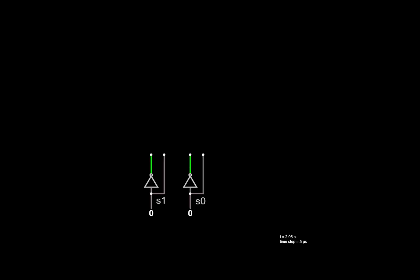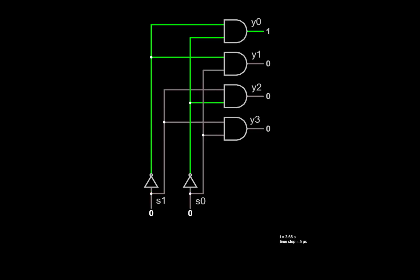To build a decoder, we start with signals for each of the inputs for the select lines and add inverters so we can get the values of their complements. Then we add four AND gates that evaluate the product terms for each of the combinations of the two select lines and their complements, such that depending upon the values of the select lines, exactly one of the AND gates is activated.